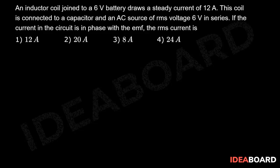An inductor coil joined to a 6 volt battery draws a steady current of 12 ampere. This coil is connected to a capacitor and an AC source of RMS voltage 6 volts in series. If the current in the circuit is in phase with the EMF, the RMS current is...